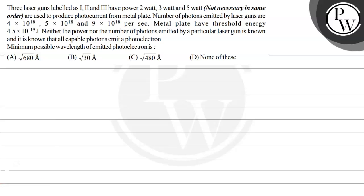Hello, let's read this question. The question says 3 laser guns labelled as 1, 2 and 3 have power 2 watt, 3 watt and 5 watt, not necessarily in the same order, and are used to produce photocurrent from a metal plate. The number of photons emitted by the laser guns are 4×10¹⁸, 5×10¹⁸, and 9×10¹⁸ per second.